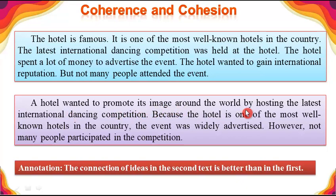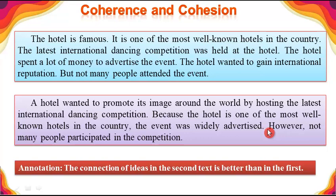We move to the next hotel paragraph: 'The hotel wanted to promote its image around the world by hosting the latest international dancing competition' — because the hotel is one of the most well-known hotels in the country, the event was widely advertised. 'That's why' shows a relationship. 'However, not many people participated in the competition.' 'However' is a cohesive device signaling a change in the direction of ideas. As annotation, the connection of ideas in the second text is better than in the first.